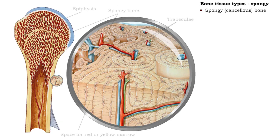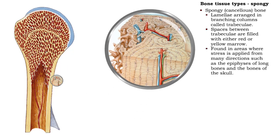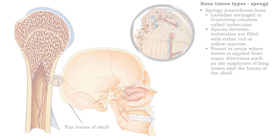In spongy, or cancellous bone, the lamellae are arranged in branching columns called trabeculae. The spaces between trabeculae are filled with either red or yellow marrow. The trabeculae are oriented along lines of stress. Spongy bone, found in bones where stress is applied from many directions, has the ability to transfer stress without breaking.